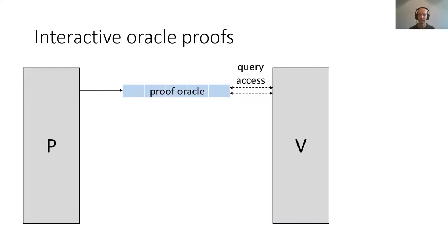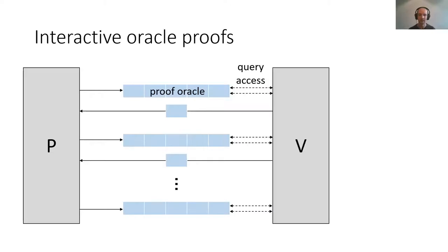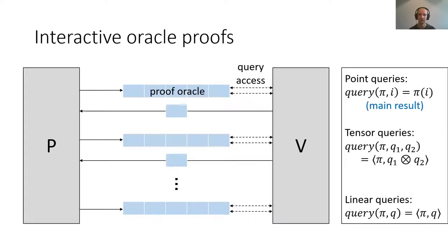Our work is an interactive oracle proof, so I'll briefly explain what that means. In the interactive oracle proof model, a prover will send proof oracles to a verifier who doesn't read the entire proof oracle, but just has query access to each proof oracle. The prover and the verifier can interact, and the verifier can send back challenge messages to the prover, who can respond with more proof oracles over several rounds of interaction. We can design interactive oracle proofs with different types of queries — for example, point queries, which return one location of a proof oracle, and our main result is a point query IOP.